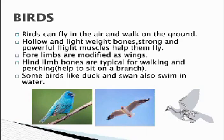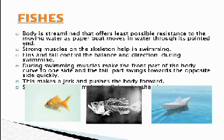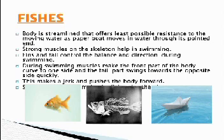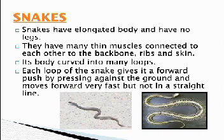Birds can fly in the air and walk on the ground. Hollow and lightweight bones and strong, powerful flight muscles help them fly. Forelimbs are modified as wings, and hindlimb bones are typical for walking and perching. Some birds like ducks and swans also swim in water. Fish have streamlined bodies that offer the least possible resistance to water. Strong muscles on the skeleton help in swimming, and fins and tails control balance and direction. During swimming, muscles make the front part of the body curve to one side while the tail part swings to the opposite side quickly. Snakes have an elongated body and no legs. They have many thin muscles connected to the backbone, ribs, and skin. The body curves into many loops, and each loop gives a forward push by pressing against the ground, allowing the snake to move forward fast but not in a straight line.